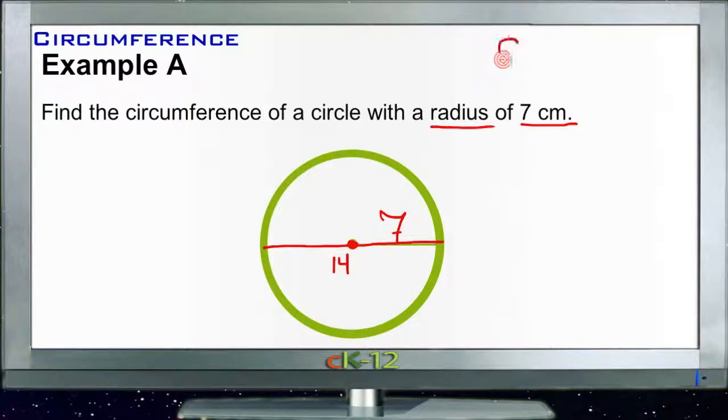And the circumference of a circle is just pi times the diameter. So if the diameter is 14, then the circumference is just d times pi, or 14 times pi. So our circumference is 14 pi.